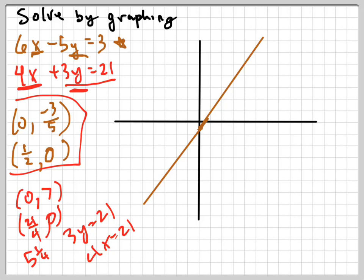So my two points are 0 comma 7. One, two, three, four, five, six, seven. I'm going up 7 on the y-axis. And 5 and 1 half, I'm sorry, 5 and 1 fourth comma 0. One, two, three, four, five, and 1 fourth is somewhere right about there.